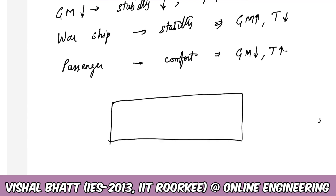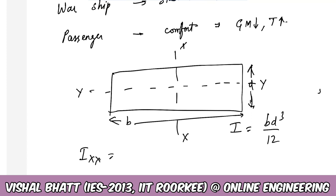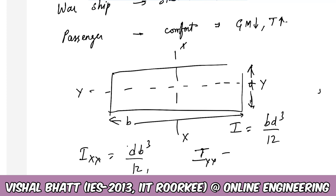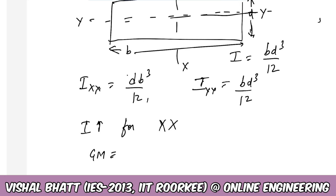For a ship, there are two values of moment of inertia: Ixx and Iyy. The formula for moment of inertia is bd³/12. For Ixx, the formula becomes db³/12, and for Iyy, it becomes bd³/12. The value of Ixx is greater, meaning stability about the xx-axis is more significant.